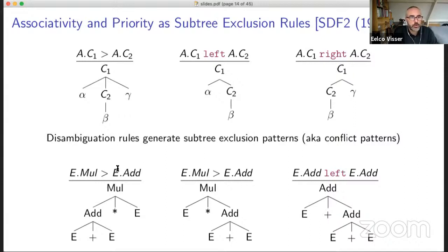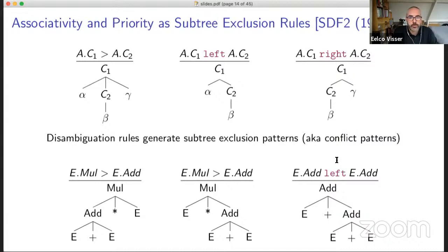For example, if multiplication is higher priority than addition, then addition may not occur as a child of a multiplication — not on the left side and not on the right side. This schema says it cannot occur anywhere as a child. Similarly for left associativity: when two productions are mutually left associative, we cannot have the right associative pattern. So we cannot have the right association of two additions.